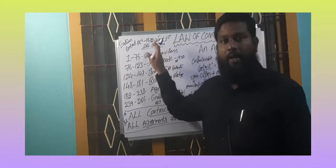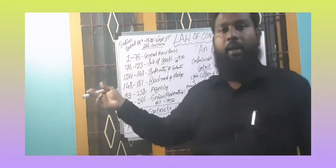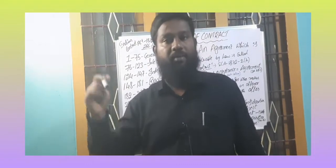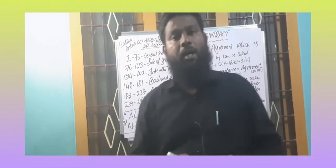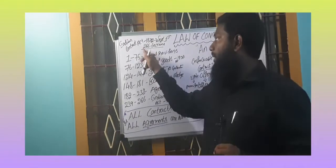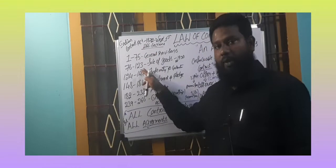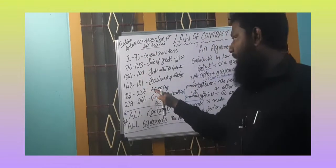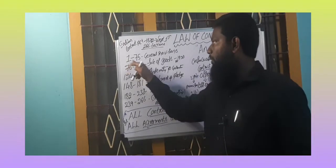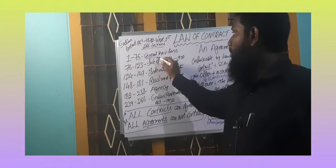This Act was formed before independence, in the presence of the British government. These 266 sections were divided into different categories. Sections 1 to 75 deal with the general provisions of contract.